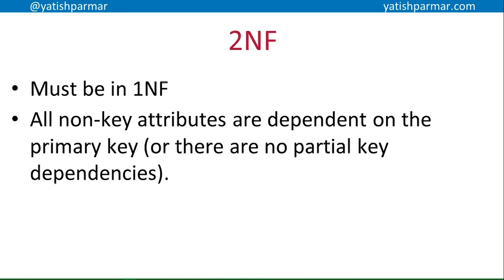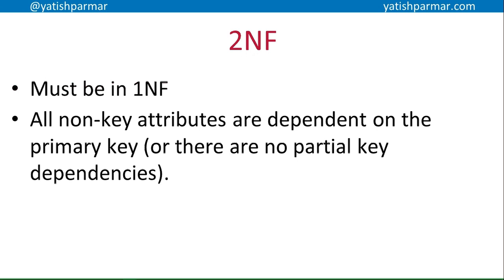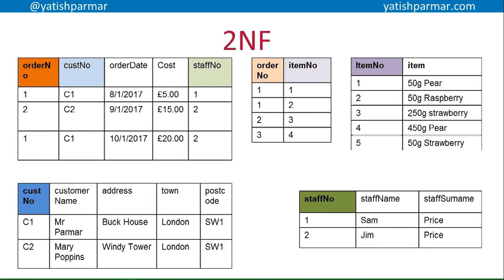Now to go into second normal form, the data has to already be in first normal form. And secondly, all non-key attributes must be dependent on the primary key. Look at the database table — there are two orders being handled by Jim Price. Staff name Jim Price handles two orders; if Mary Poppins phoned in and I phoned in, I could spell my name differently across the two records, or my customer name Mr. Palmer could be changed across the two orders. That's going to create errors — the integrity of the data set is going to be compromised. So we need to identify the non-key attributes and shift them out.